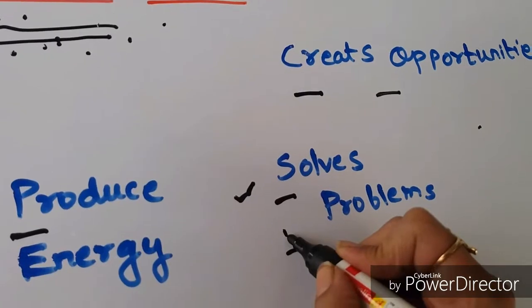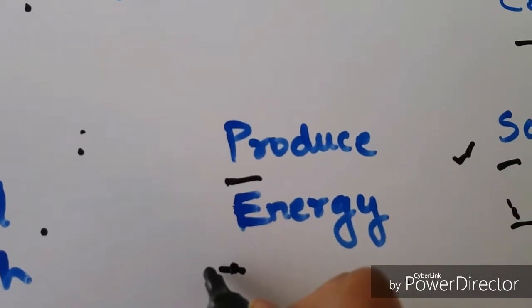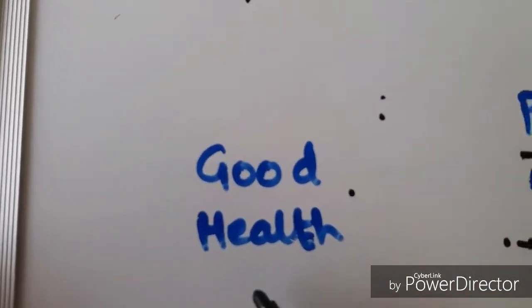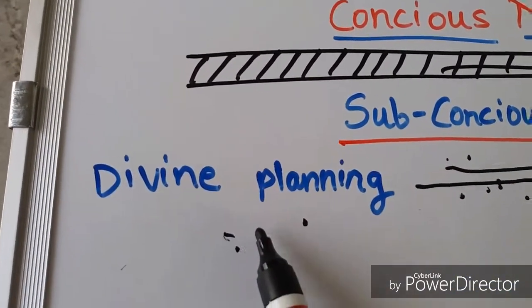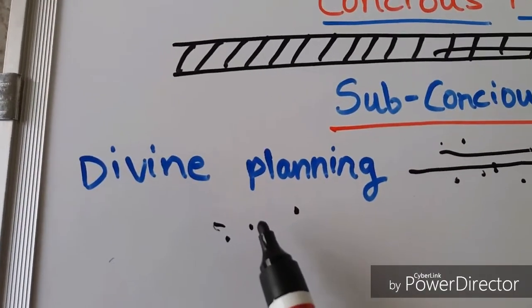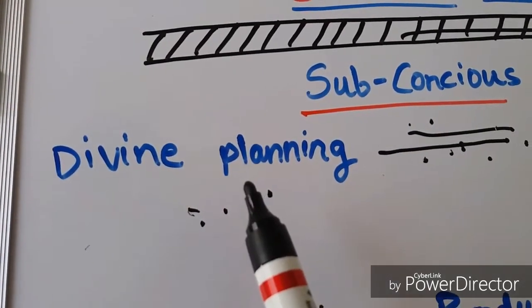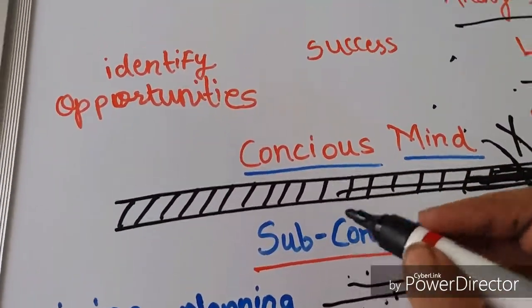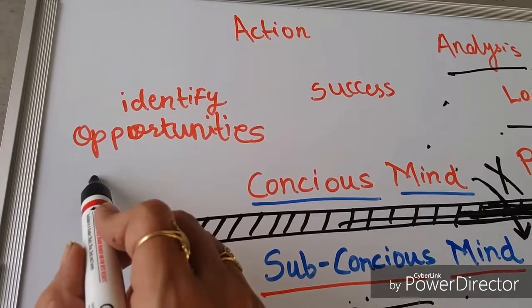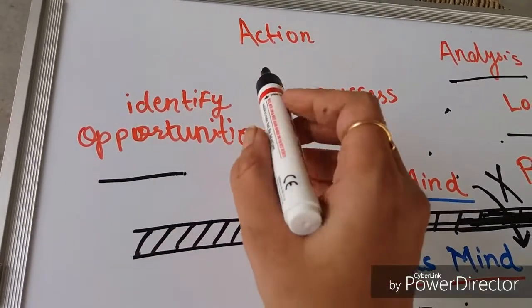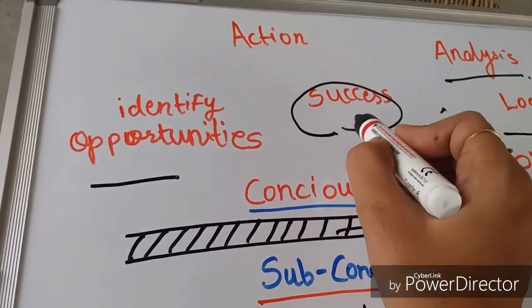Then it will produce instantly energy to accomplish that particular goal, and it will make or keep you in good health. And divine planning is that everything will go according to your will or according to the desirable thing will happen to accomplish your goal. And when your subconscious mind accepts your goal, consciously you will identify opportunity in the direction of completing your goal, you will take proper actions for it, and then you will finally be successful in accomplishing your goal.